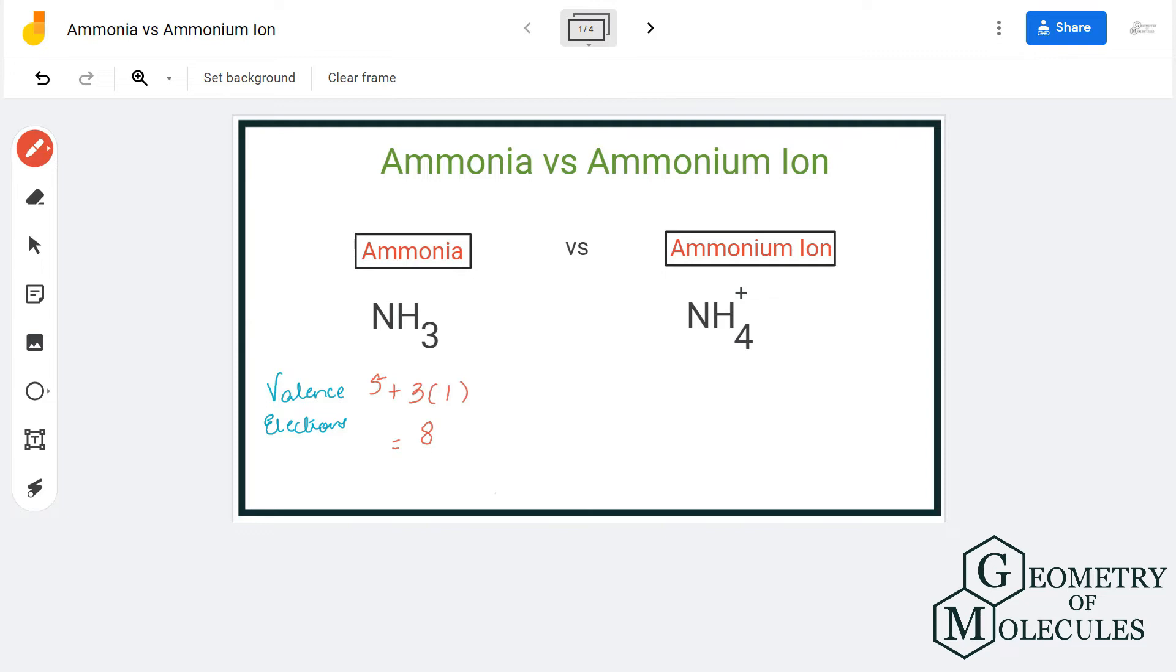When we move to NH4 plus, here we have four hydrogen atoms so there will be nine, but as you can see it has a plus charge. That means it is giving away one electron to gain this positive charge, so here for NH4 plus we also have eight valence electrons.